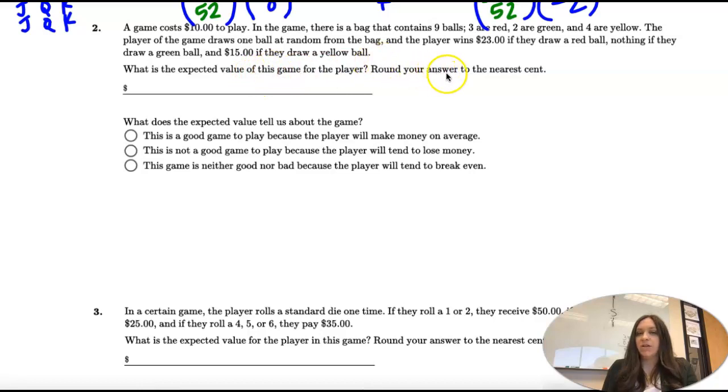What's the expected value and what does it tell us? There are three ways this can go: red ball, green ball, or yellow ball.